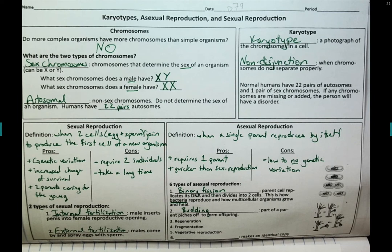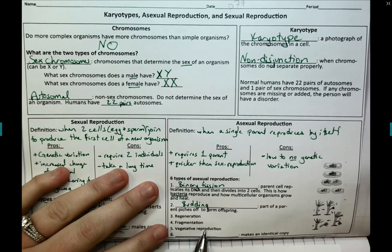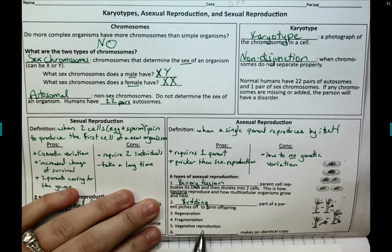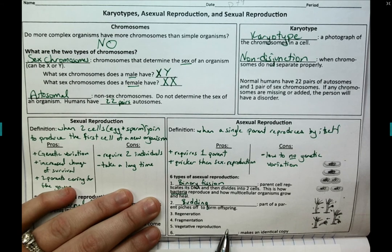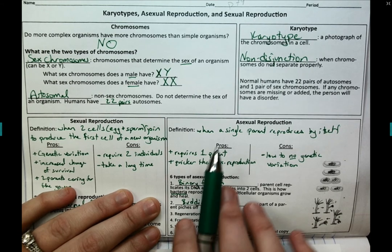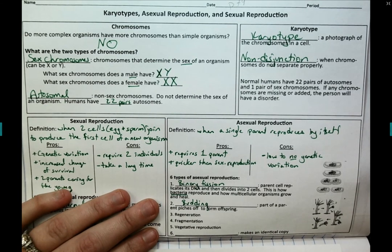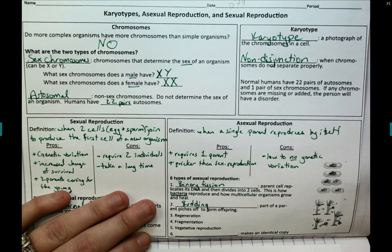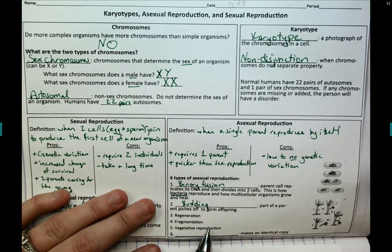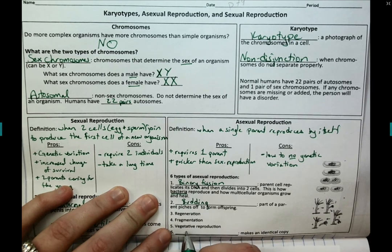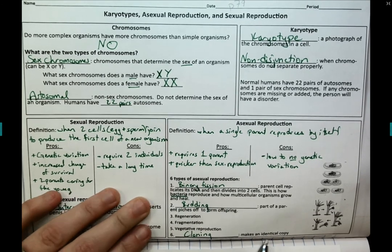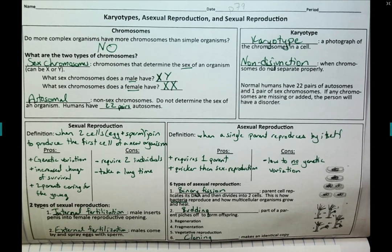Fragmentation is very similar to regeneration, but you have a fragment of the organism left over and it regenerates. Vegetative reproduction — think of strawberry plants — is asexual reproduction where they keep sending out vine after vine. That entire row of strawberry vine is all one organism, but it has technically reproduced because every new bud is a new strawberry. And the last type of asexual reproduction is cloning — making an identical copy of the parent.